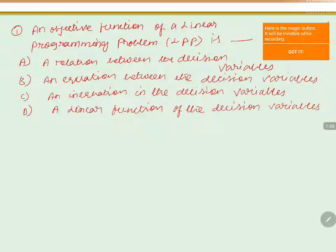In a linear programming problem, there will be an objective function. We know that the objective function will be in the form of Z equals AX plus BY. If you observe, the power of X is 1 and the power of Y is also 1. It is a linear function because the power is 1, and Z depends upon the two variables X and Y.